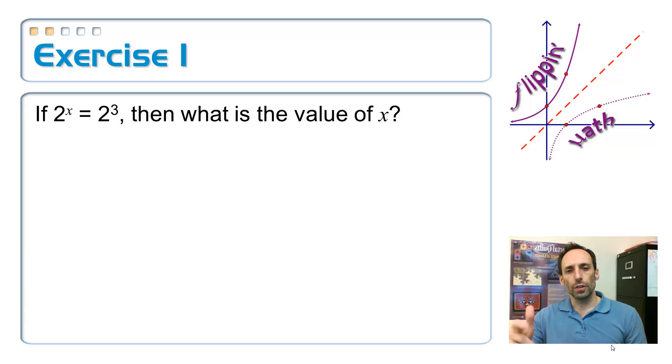Let's look at this first example. If 2 to the x is equal to 2 to the 3rd power, what must x be equal to? Well, the only thing that makes sense here is x is equal to 3. So what I'm saying is, if the bases are the same, then the mustaches must be the same.